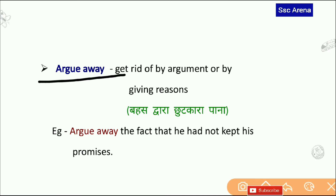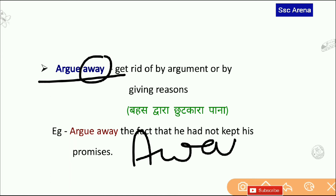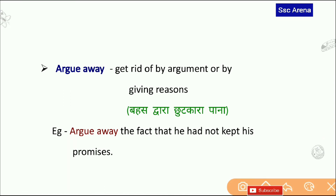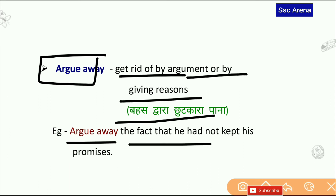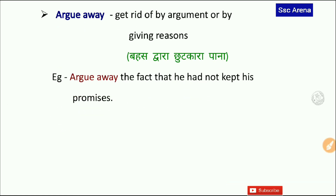Argue Away — Away एक preposition है जिसका मतलब होता है दूर होना। Phrasal verbs में away का 99% use दूर जाने से संबंधित होता है। Argue Away का मतलब होता है get rid of by argument or by giving reasons — बहस द्वारा चुटकारा पाना। Argue away the fact that he had not kept his promises।